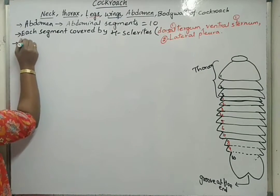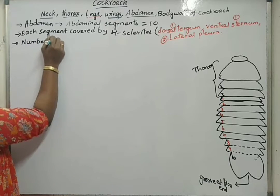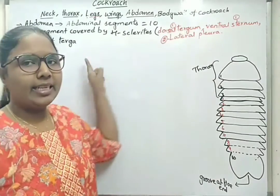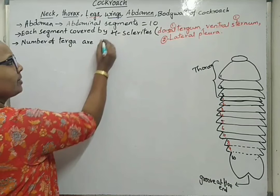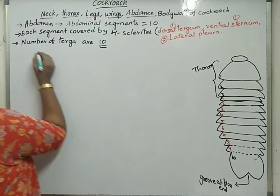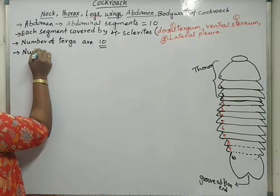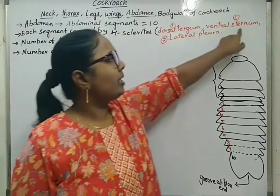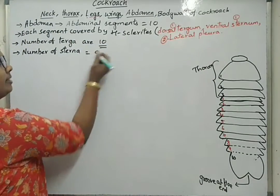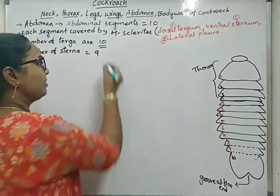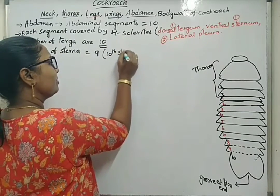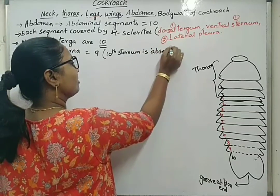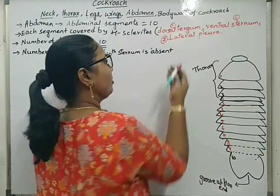The number of terga — tergum is singular, terga is plural — are 10. The number of sterna — sternum is singular, sterna is plural — are 9 only, because the 10th sternum is absent.